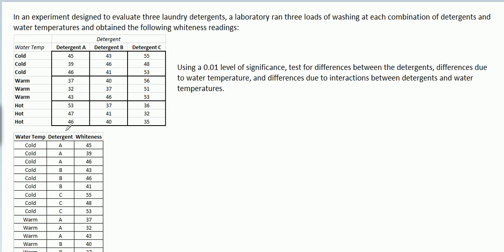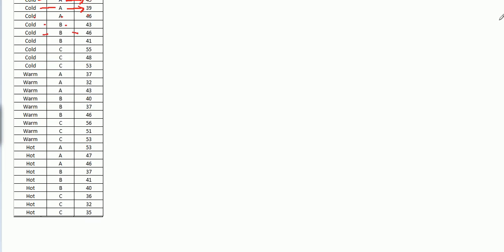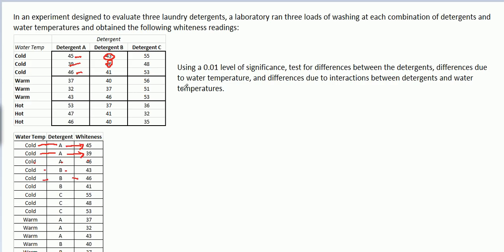So here you see we have water temperature cold, detergent A, whiteness reading 45. Water temperature cold, detergent A again, whiteness reading 39. That's these two so far. Cold, A, 46. Cold, B, 43. Cold, B, 46 — all the way down to hot, C, 35, which is this last entry.